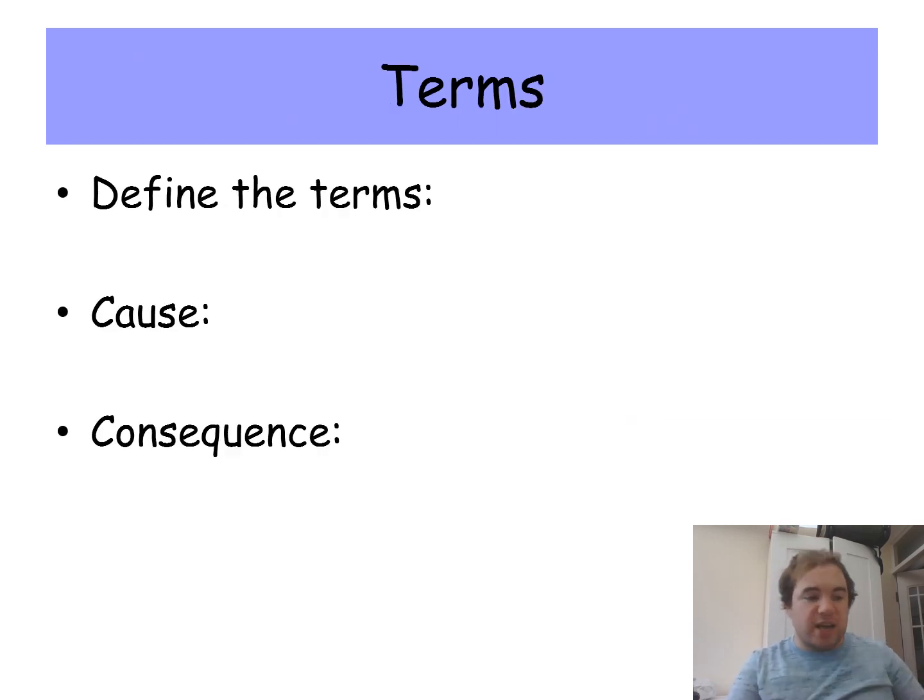Now before you get into the deeper, bigger picture things, the first thing I want you to do is to define these terms. Try and do them from memory: cause and consequence. Pause now if you need a little bit of time to think and write that in your book.